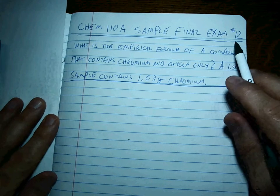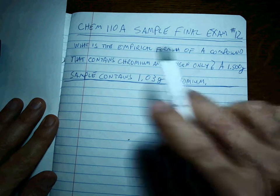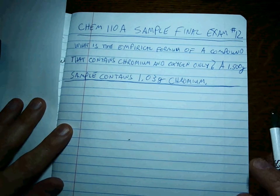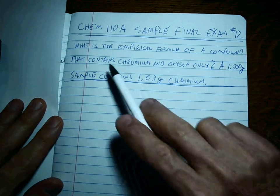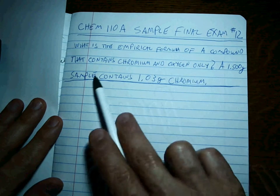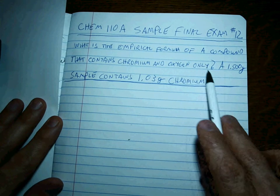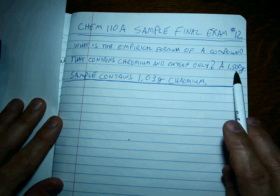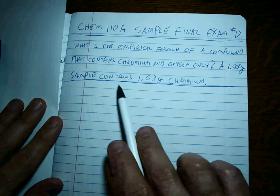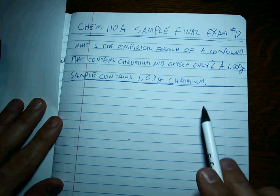All right, here we go — the last sample final exam question, question 12, on the Chem 110A sample final. What is the empirical formula of a compound that contains chromium and oxygen only? A 1.500 gram sample contains 1.03 grams of chromium.